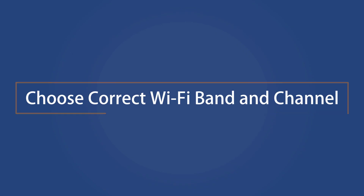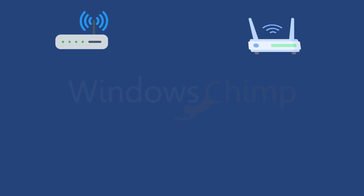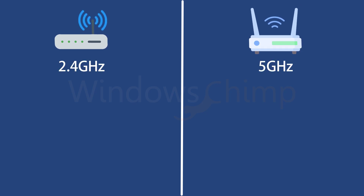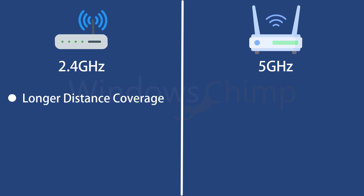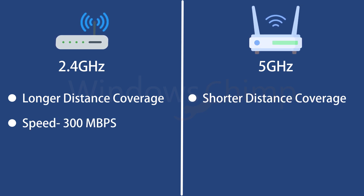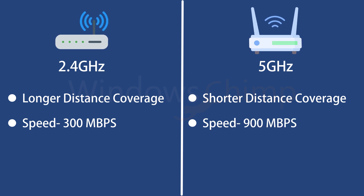Choose the correct Wi-Fi band and channel. There are two common bands for Wi-Fi routers: 2.4 GHz and 5 GHz. The 2.4 GHz routers support longer distance coverage, but they offer less speed — their speed range is 300 MB per second. However, 5 GHz routers provide 900 MB per second speed, but for a shorter distance. So you need to switch to the 5 GHz band, but make sure to put your router nearby your PC.